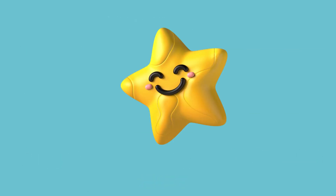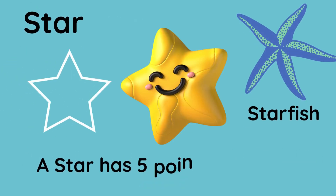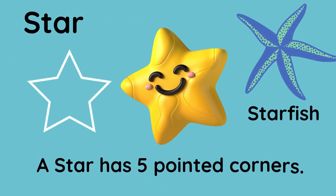The last shape is the star. A star has five pointed corners. Examples: starfish and the star itself.